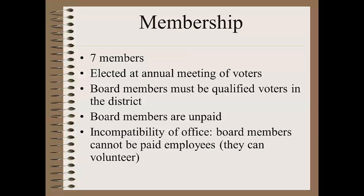First, let's talk about membership. District libraries have boards consisting of seven members. These members are elected in an annual meeting of the voters of the library district, which I'll get to shortly. Board members must themselves be qualified voters of the district. Board membership is an unpaid position, although they can be reimbursed for expenses. Board members cannot be paid for working at the library apart from their board role either. There's a legal doctrine called incompatibility of office, which holds that it's incompatible to be an employee of the board that you're a member of.